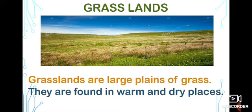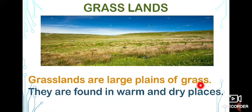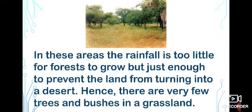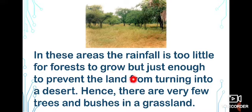Grasslands are large plains of grass. They are found in warm and dry places. In grassland areas, the rainfall is too little for forest to grow, but just enough to prevent the land from turning into a desert. Hence, there are very few trees and bushes in grassland.